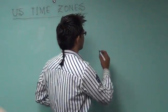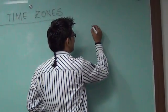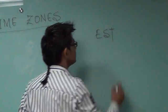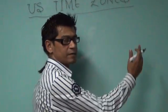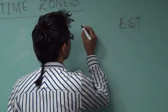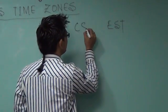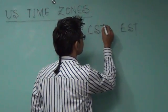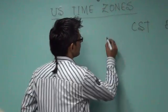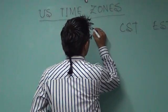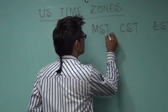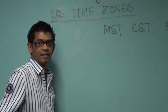Starting from the eastern side, we begin with EST — Eastern Standard Time. After that, if you travel towards the west, we have CST — Central Standard Time — and then MST, which is Mountain Standard Time.